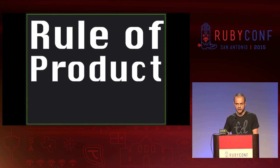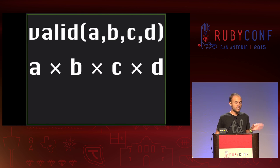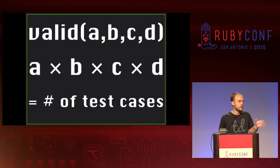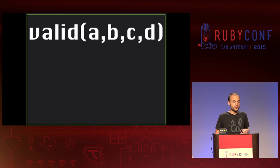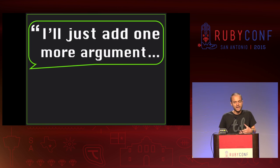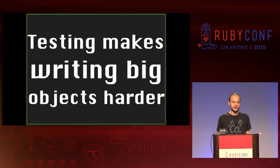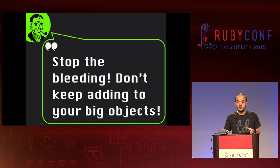What I fell victim to there is a thing called the rule of product, from the school of combinatorics and math — it's a real math thing because it has a Wikipedia page. If you've got a method with four arguments, you take each of those arguments and the number of possible values of each of them, multiply them together, and that gives you the total number of potential combinations — the upper bound of test cases you might need to write. In this case, with all Booleans, it's two to the fourth, so 16 test cases. If you're a team used to writing big objects, you're probably in the habit of thinking 'I have some new functionality, I'll just add one little more argument' — not realizing you're doubling the number of test cases.